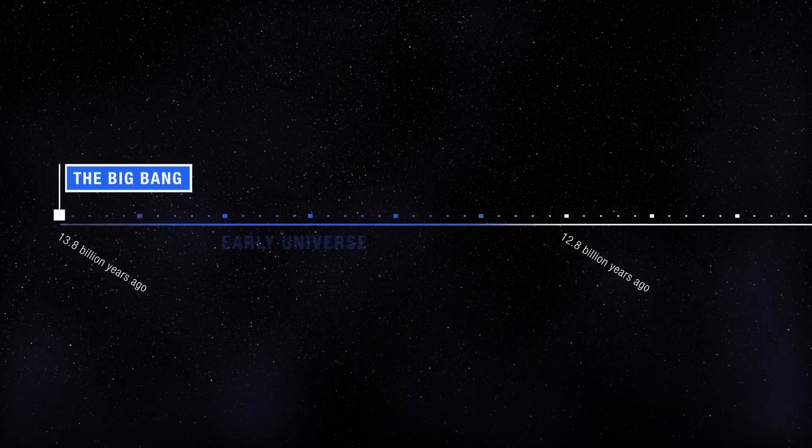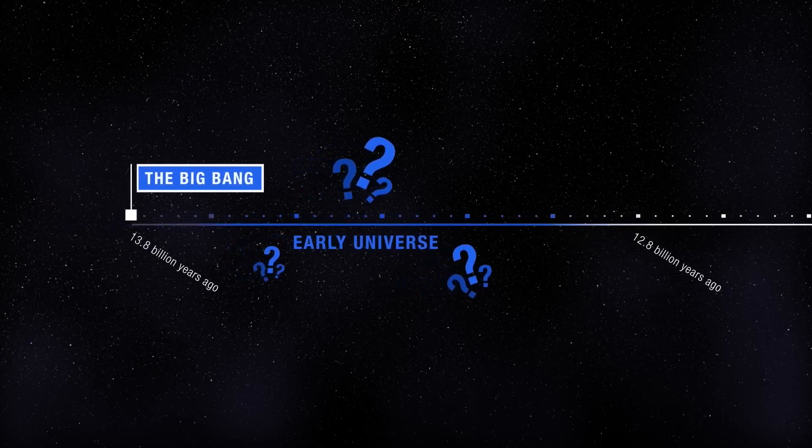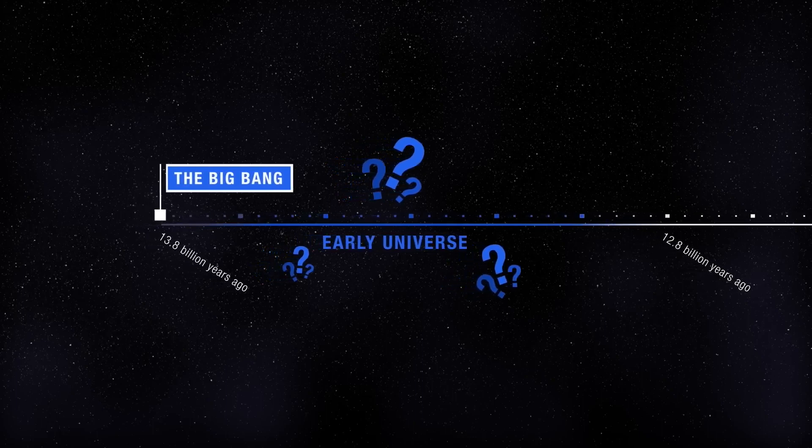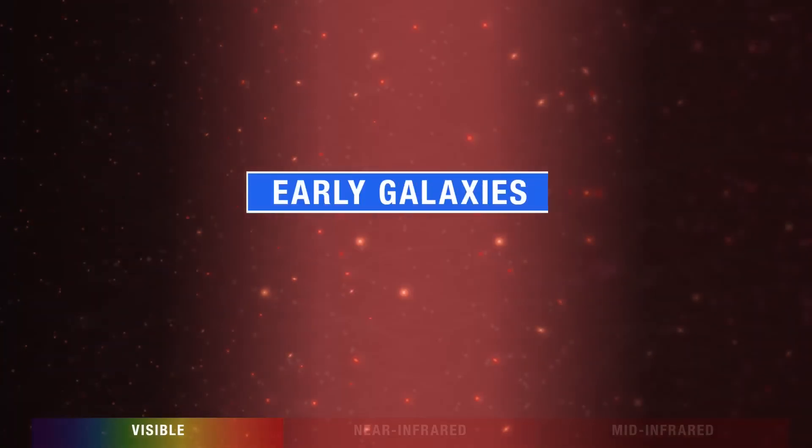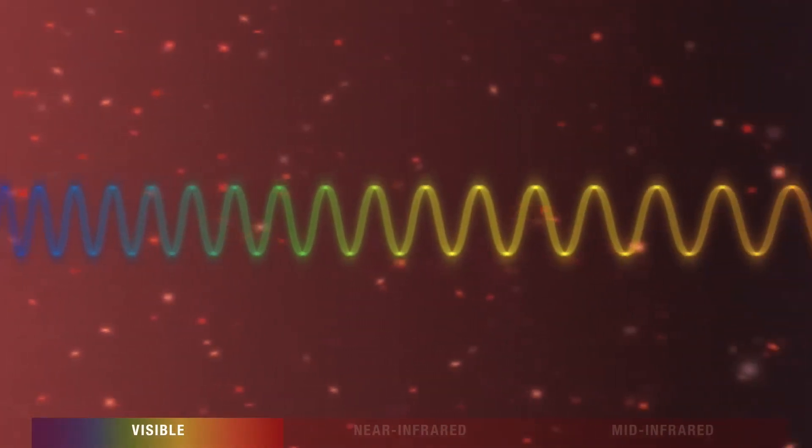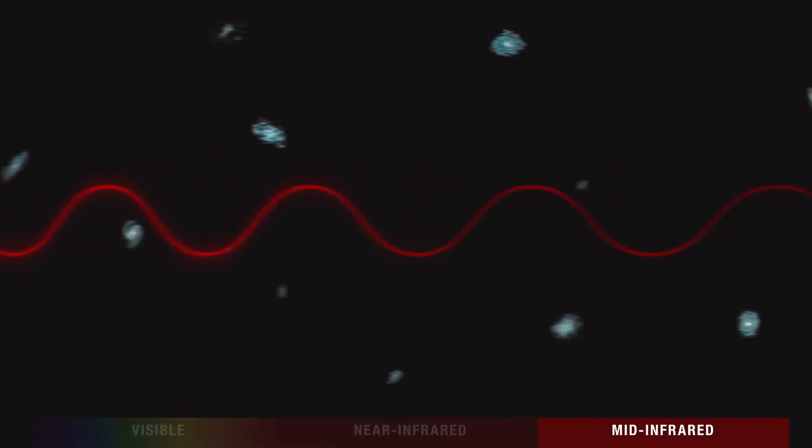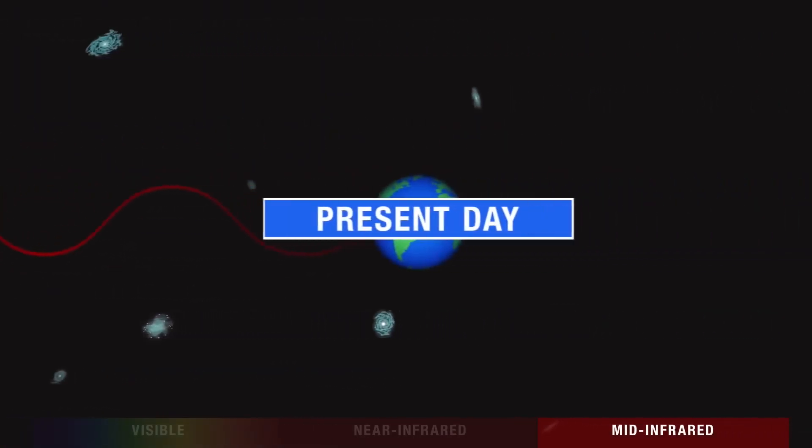Detecting light from the first galaxies to form has been a challenge for even the most powerful telescopes. As the light early galaxies emitted traveled through space, that space itself was expanding, stretching the light to longer infrared wavelengths.